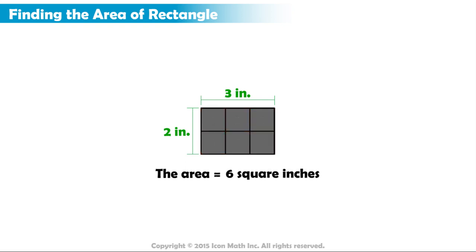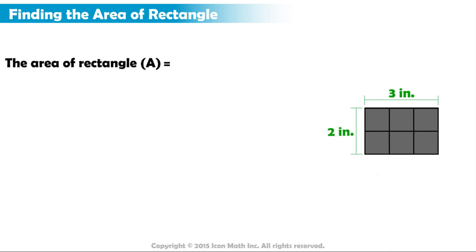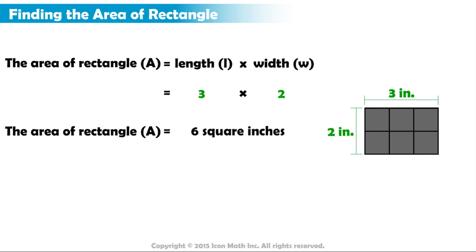We also learned a simple formula to calculate the area of a rectangle, which is the area of a rectangle equals length times width. In this case, the length of the rectangle is 3 inches, and its width is 2 inches. Since both measurements use the same unit for length, we can multiply them using the formula. So the area equals 3 times 2, and that will give us the same answer, which is 6 square inches.